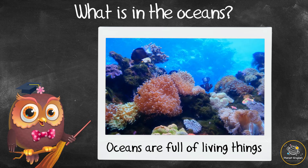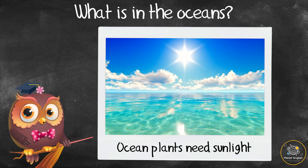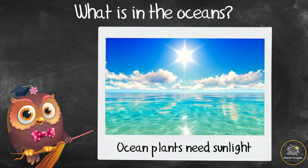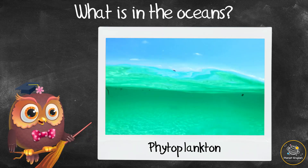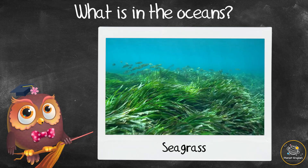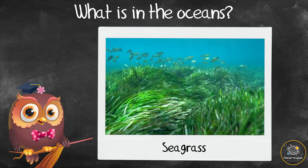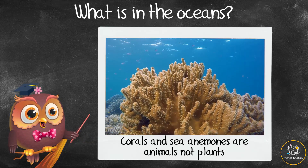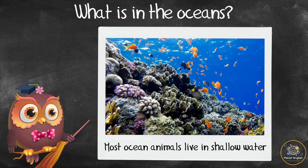What is in the oceans? Oceans are full of living things. Ocean plants need sunlight to live, so they grow close to the water's surface. The most common ocean plants are called phytoplankton, which are tiny plants that drift with the ocean currents. Sea grass and seaweeds also grow in the world's oceans.